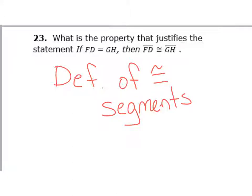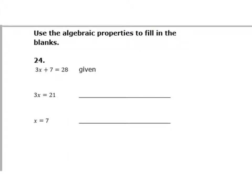Number 24: use the algebraic properties to fill in the blank. Given 3x plus 7 equals 28, I can see the 7 was subtracted so it canceled out, and 28 minus 7 became 21. I subtracted on both sides of the equals, which means this is the subtraction property of equality.